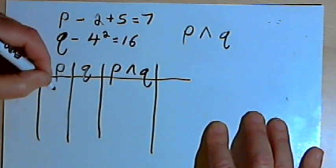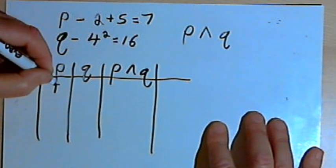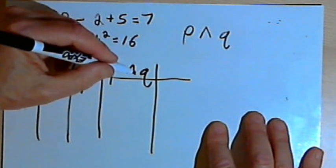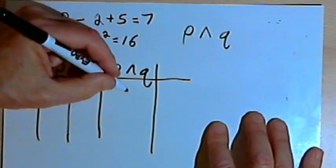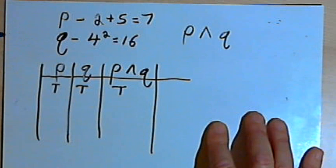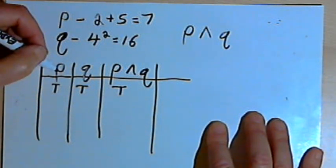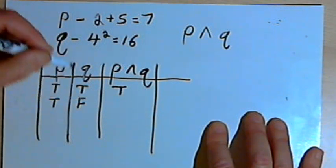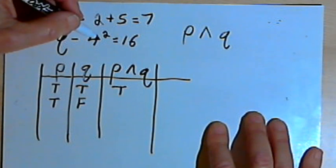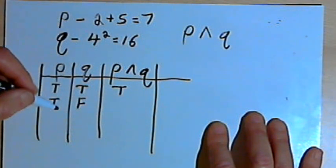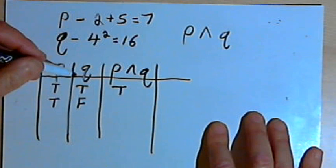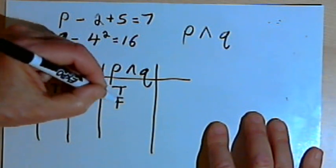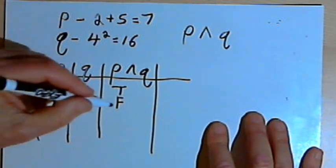I can fill these columns in. If statement P is true and statement Q is true, then the conjunction P and Q would be true, because both have to be true for the conjunction to be true. If statement P is true but statement Q is false — like if I'd written 4 squared equals 7 — then the conjunction of P and Q would be false. A conjunction of true and false is false.